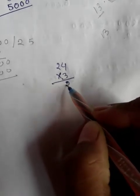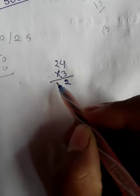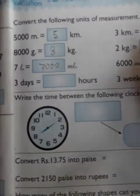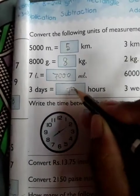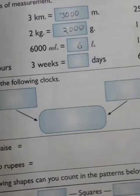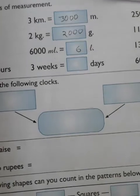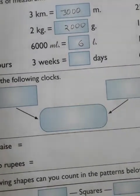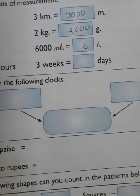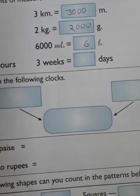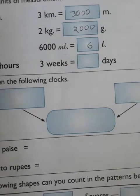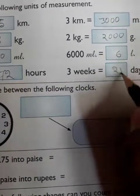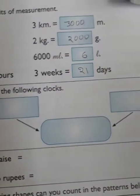3 days equals how many hours? 1 day has 24 hours, so 3 times 24 — carry 1 — 3 times 2 is 6, plus 1 is 7, giving 72. The answer is 72 hours. Next: 3 weeks equals how many days? 1 week equals 7 days, so 3 weeks times 7 equals 21 days.